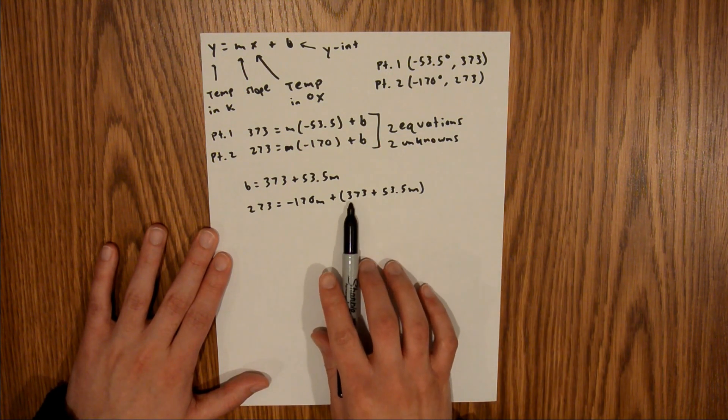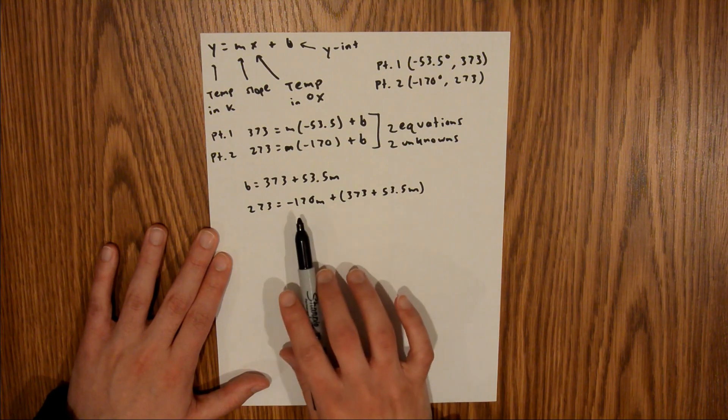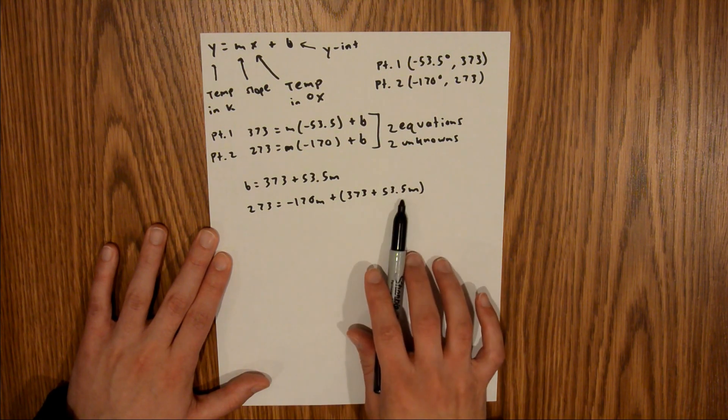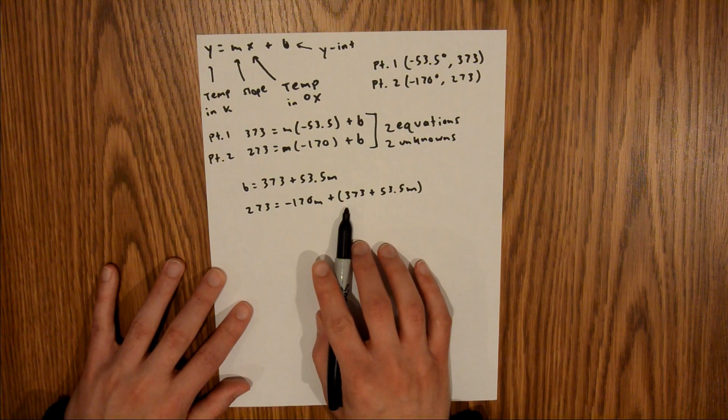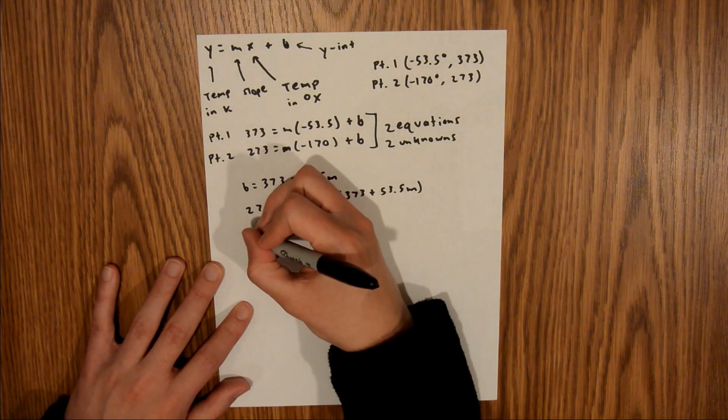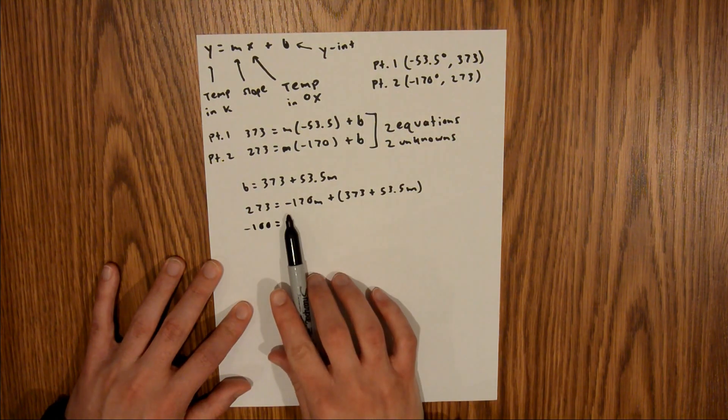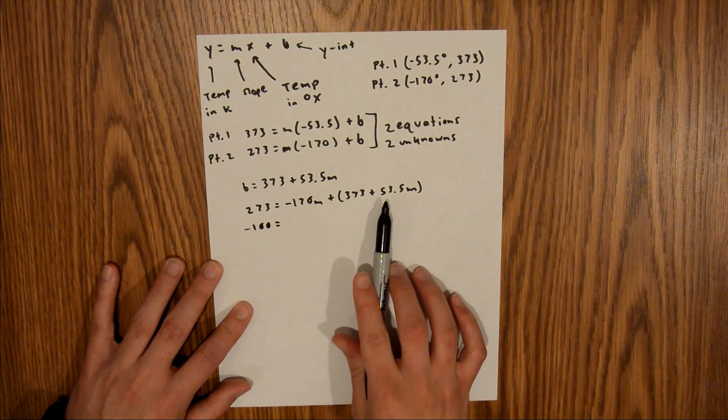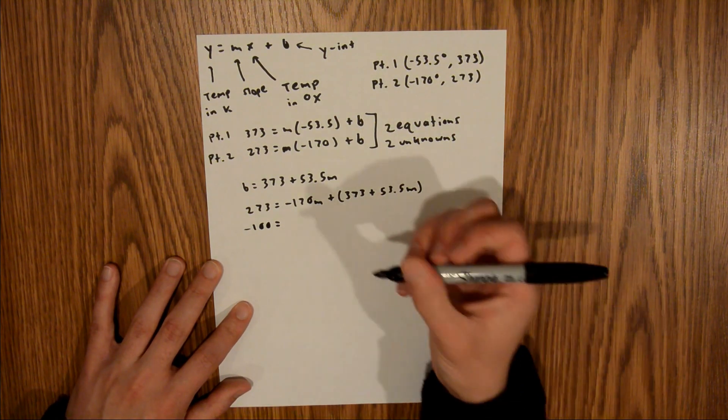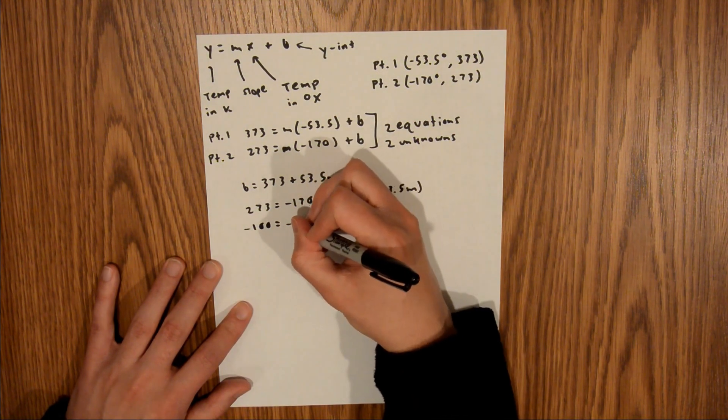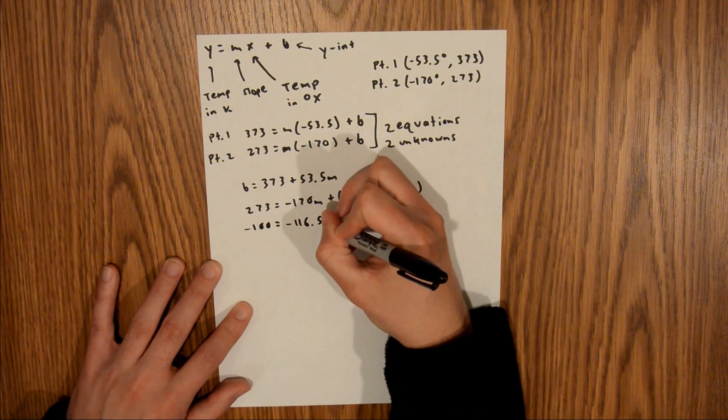and to do that, I'm going to subtract 373 from both sides, and then combine these two m terms on this side. If I subtract 373 from both sides, that's going to give me negative 100 on this side, and that's going to be equal to negative 170m plus 53.5m, which is going to be equal to negative 116.5m.